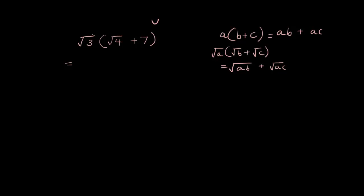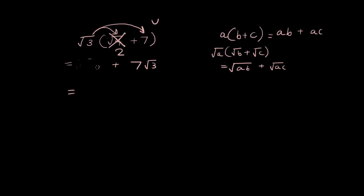So now I'm going to multiply this using the distributive law. I have square root of 3 times square root of 4, plus square root of 3 times 7, so that's 7 square root of 3. And square root of 4 equals 2, so the first term is just 2 times square root of 3. The problem turned out to be easier than I thought.